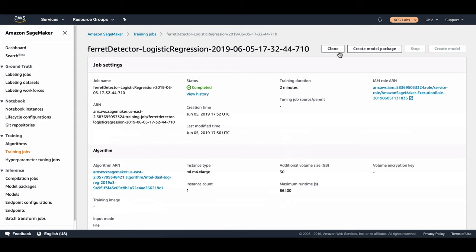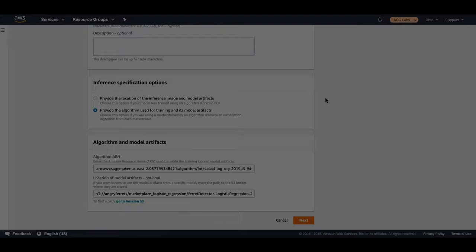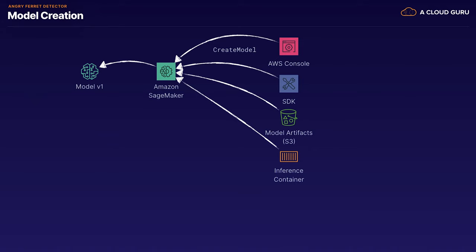As we said from the beginning, we can also make use of models or model packages as they come to us and then deploy them as a model. A brief overview of how SageMaker hosting services deploy models: first it creates a model, then it creates an endpoint configuration, then it creates an endpoint. The endpoint is the specific point we call using the SDK to get inferences back. To create a model, we can use the AWS console or the SDK with the create model method.